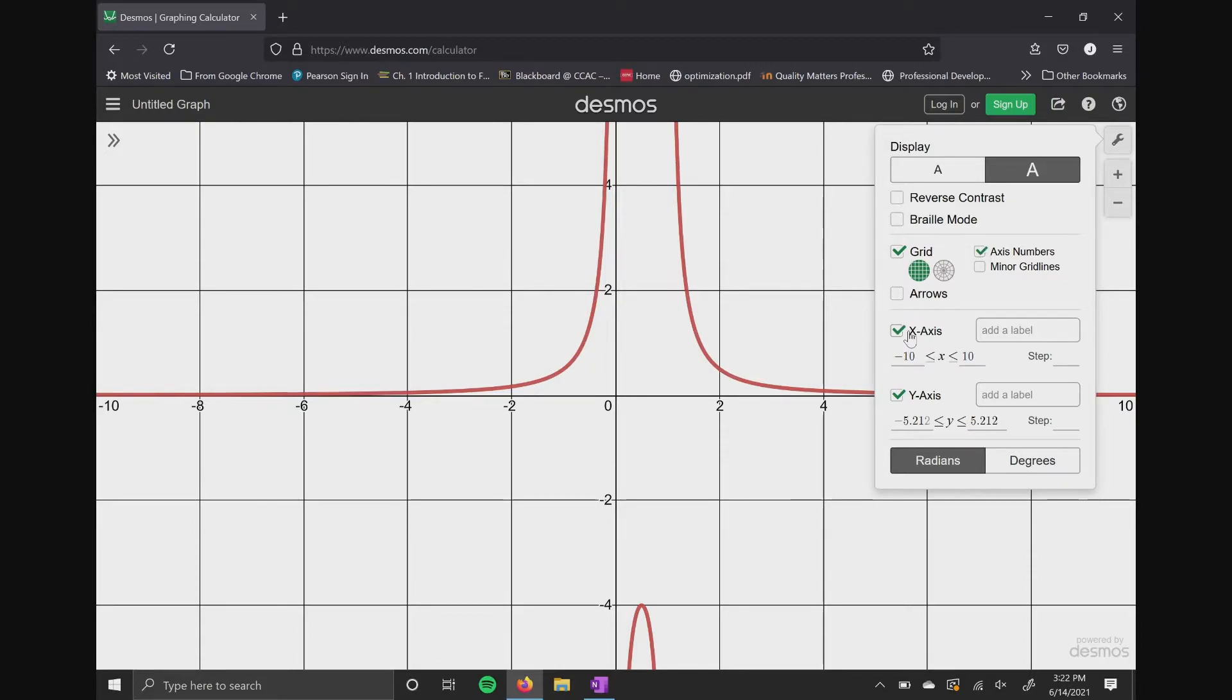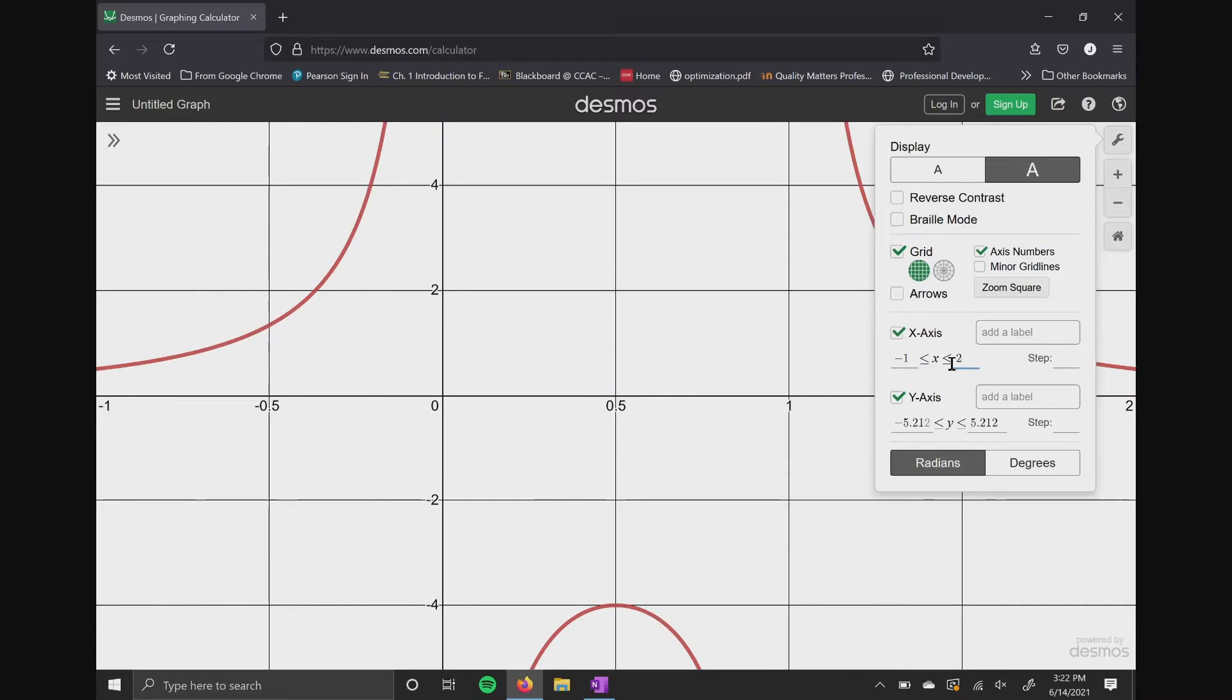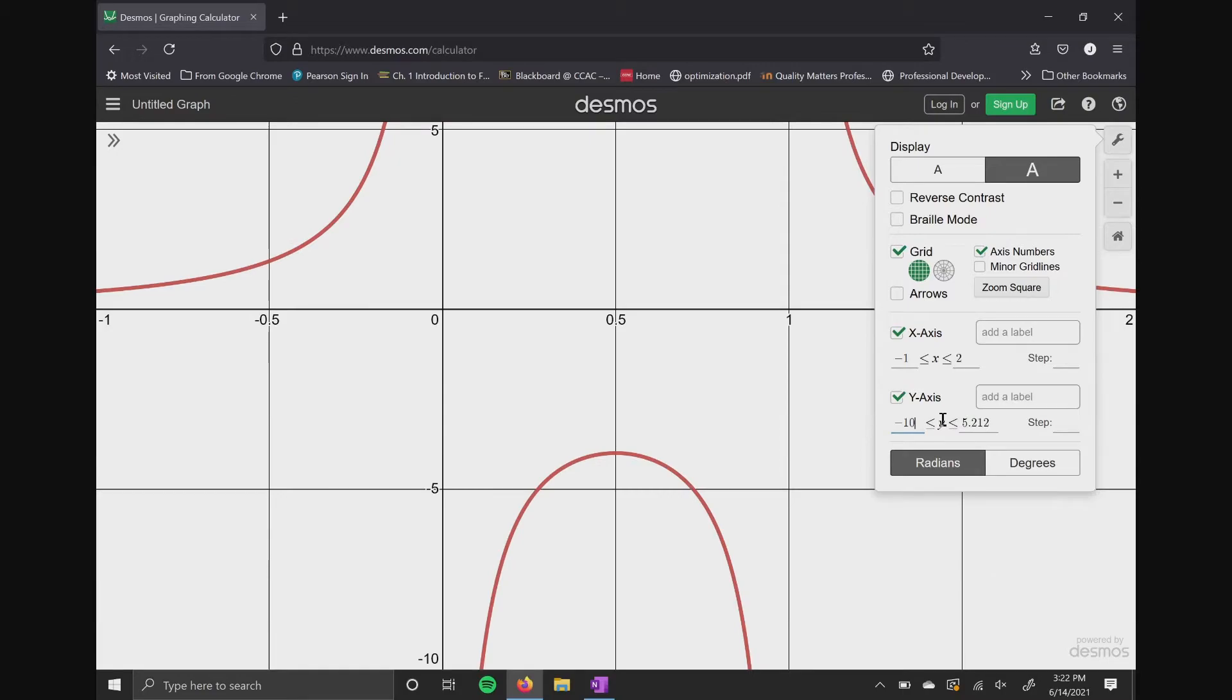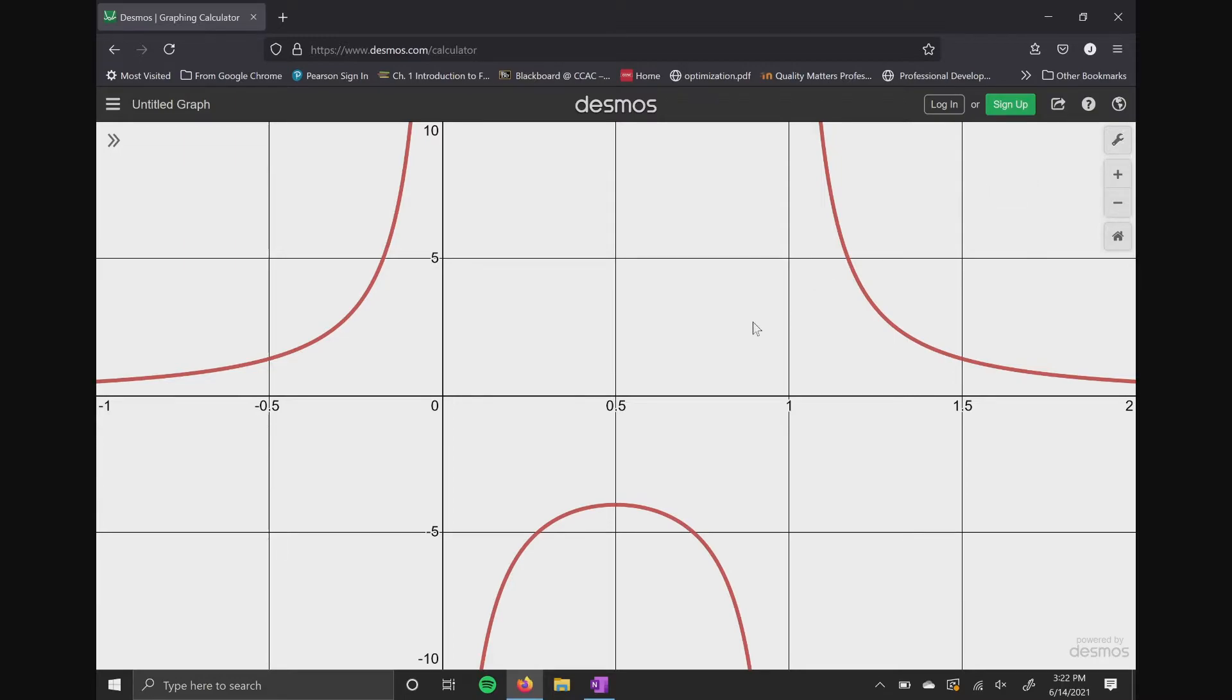Down here where it says x-axis, this is where we're gonna change it. So we're gonna make it negative 1 to 2, and then the y-axis we'll make it what they want, which is negative 10 to 10. All right. So that's what they want in terms of a picture.